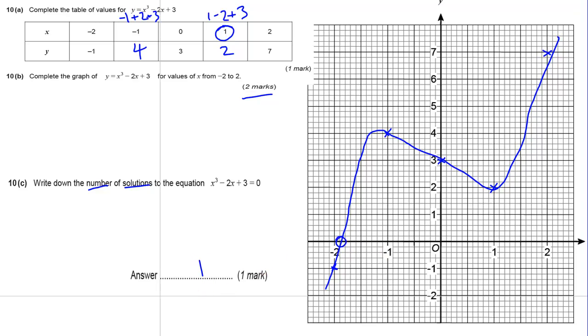So there's 1 solution, because it crosses in 1 place. Now with a cubic graph, we can have lots of different answers here. We could have 1 solution where it crosses once. We could have 2 solutions, if it crosses once here and then it touched just here and then went back up again. We could even have 3 solutions where it goes up, comes down and goes up again. Each time it crosses the x-axis, that's a solution. Okay, so there is just the 1 solution there for 1 mark.